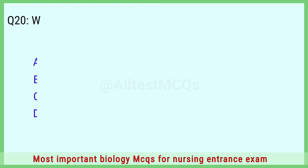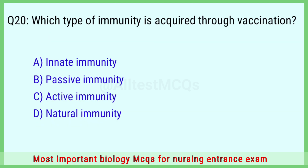Question number 20: Which type of immunity is acquired through vaccination? The right answer is option C: active immunity.